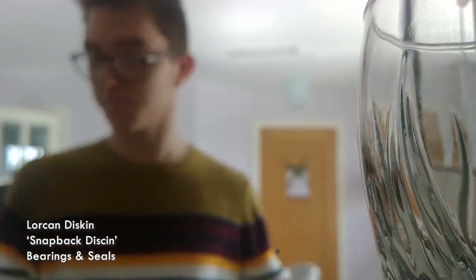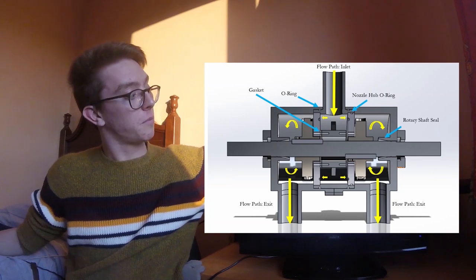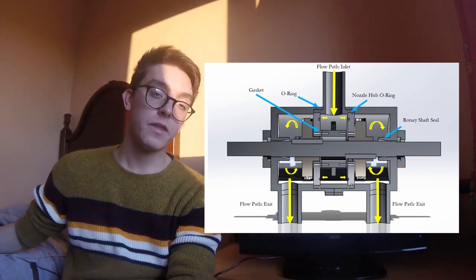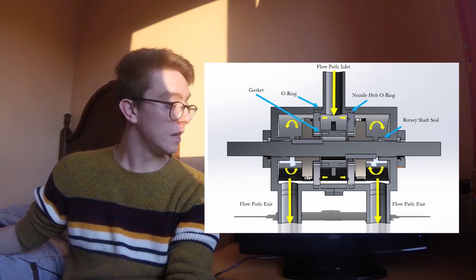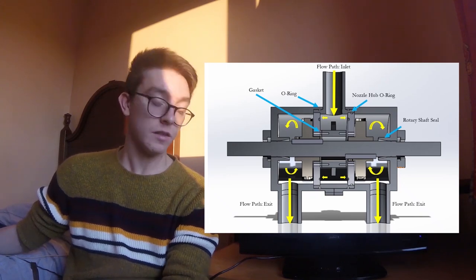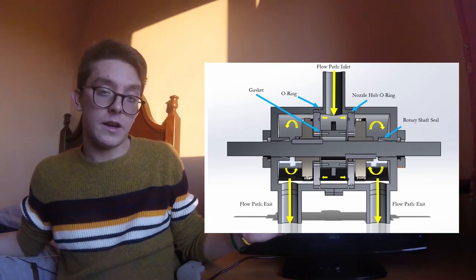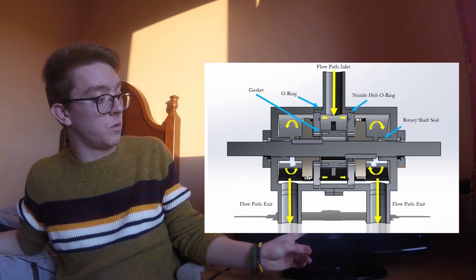My name is Lorcan Diskin and today I'll be running through the bearings and seals selected as well as the steam flow path of our current turbine missile. The steam enters through the inlet port and into the central hub. From there, it travels through the nozzles, leaving at a lower pressure and thus a higher velocity, causing the blades and the connected shaft to rotate and out through the two outlet ports.